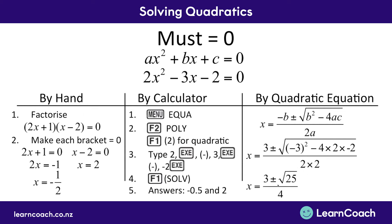We can now simplify this down. Negative 3 squared is 9. Negative 4 multiplied by 2 is negative 8, multiplied by negative 2 is 16. So we have 9 and 16, which makes 25, so we have the square root of 25 in here. On the bottom we have 2 times 2, which is 4. So x equals 3 plus or minus the square root of 25, divided by 4. The square root of 25 is 5, so we get 3 plus or minus 5 divided by 4. Using plus: 3 plus 5 is 8, divided by 4 gives us 2. Using minus: 3 minus 5 is negative 2, divided by 4 gives us negative a half.